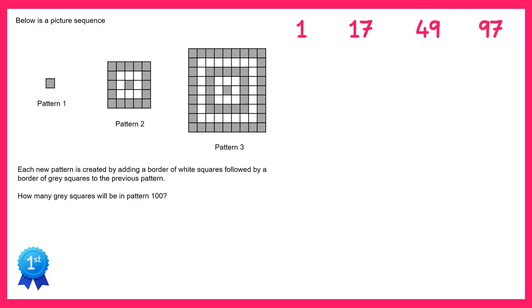We now need to try and find the nth term of this sequence. So let's look at the differences. From 1 to 17 is plus 16, 17 to 49 is plus 32, and 49 to 97 is plus 48.